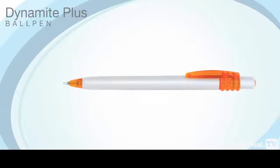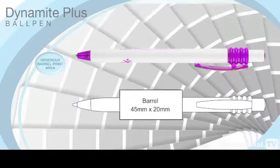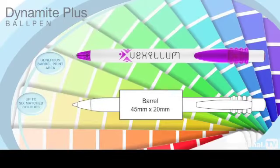The Dynamite Plus ball pen, as with the Dynamite colour and frost versions, operates on a push button mechanism and has a generous barrel print area that can carry your advertising message in up to six matched colours.